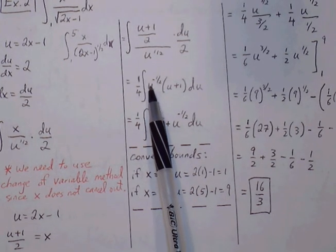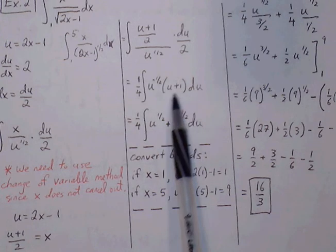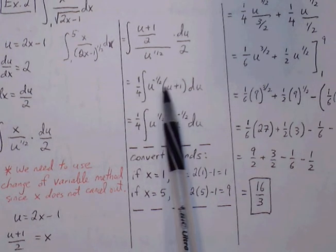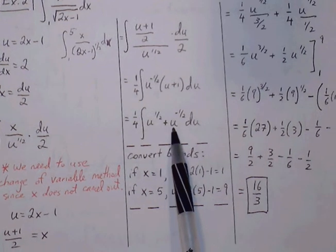So then we can bring the u to the 1 half up to the top. But here in the top, if we distribute through, we're going to get u to the 1 half plus u to the negative 1 half du.